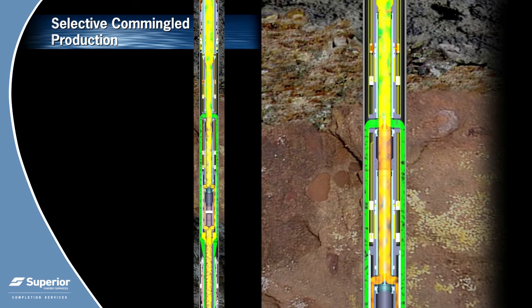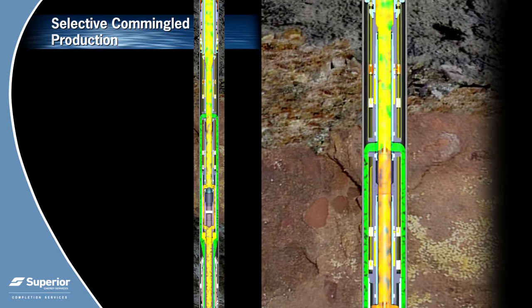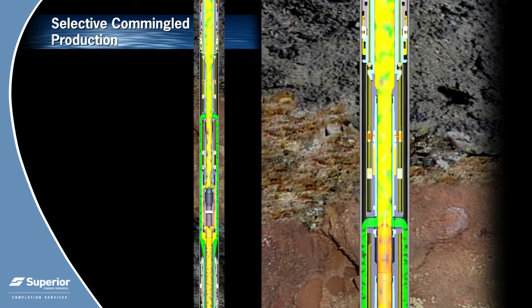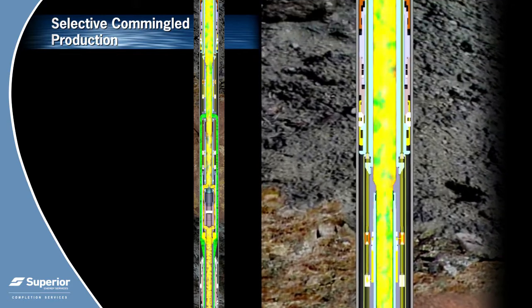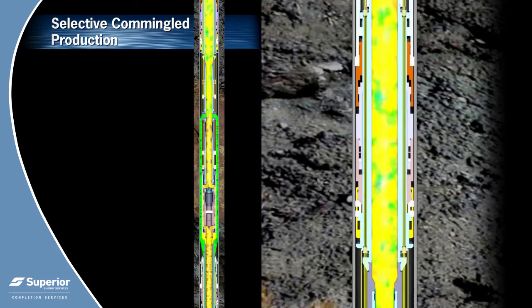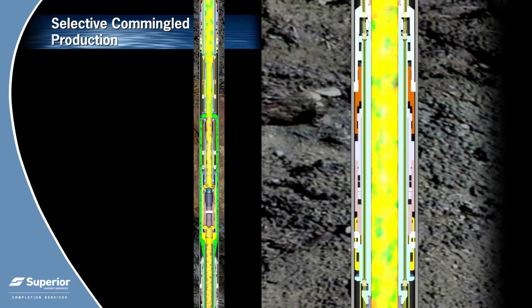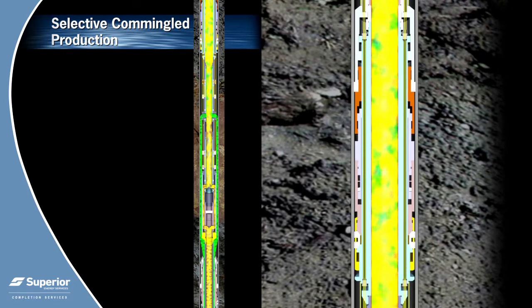Operators may utilize the HAWC system to control water production. Superior offers multiple position choke type sleeves to assist in controlling downhole flow. Choke type sleeves may also be utilized in co-mingled environments to adjust production as necessary.